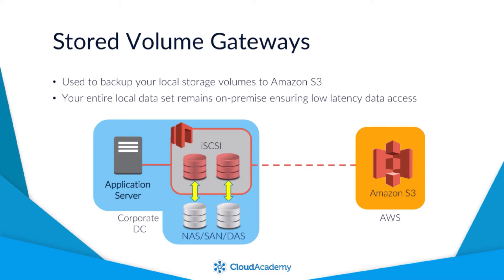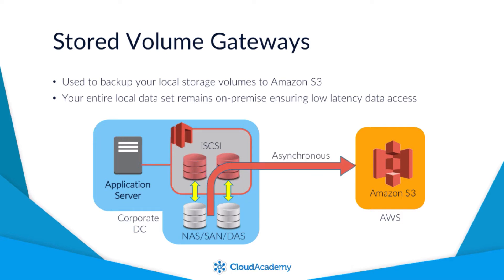During volume creation, these are mapped to your on-premise storage devices, which can either hold existing data or be a new disk. As data is written to these iSCSI devices, the data is actually written to your local storage services such as your own NAS, SAN, or DAS storage solution. However, the storage gateway then asynchronously copies this data to Amazon S3 as EBS snapshots. Having your entire data set remain locally ensures you have the lowest latency possible, which may be required for specific applications or security compliance and governance controls, while also providing a backup solution governed by the same controls and security that S3 offers.